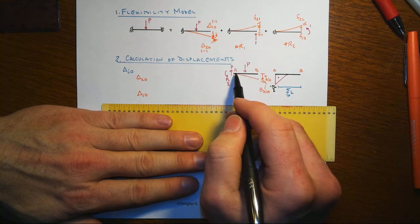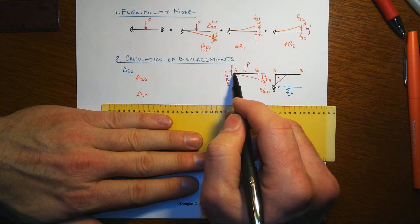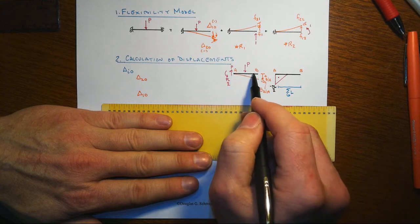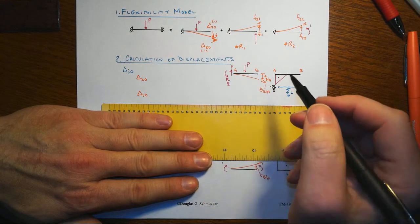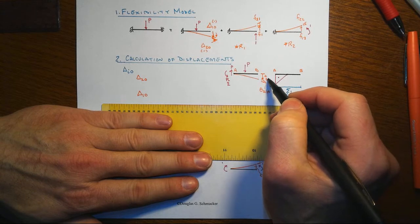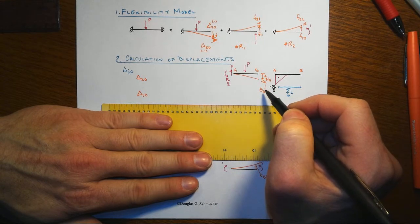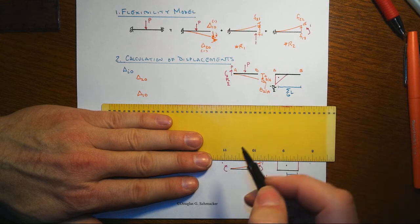We draw this deflected shape, we have the tangent to the deflected shape at A, which is at the fixed end, which follows right along with the undeformed or undisplaced position of the beam, and that's exceptionally convenient, since then the tangential deviations and the relative angle changes that we can calculate using moment area method will be directly displacements.